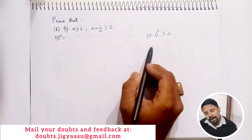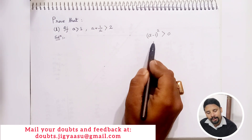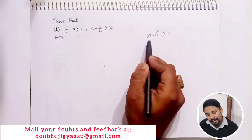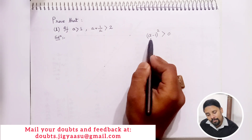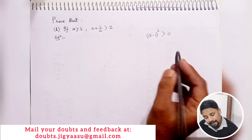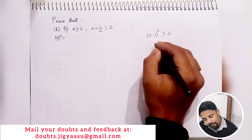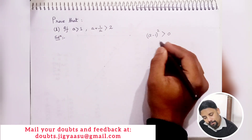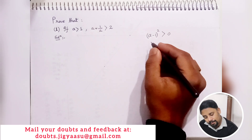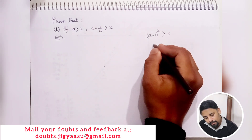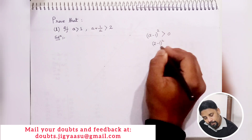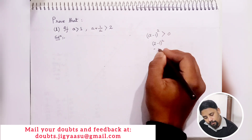I have written that (a minus 1) whole squared is greater than 0. No matter what value of a we take, the value of (a minus 1)² is always greater than 0. Let's take a few examples. If a equals 2, then (2 minus 1)² equals 1² which is 1, and it is greater than 0.